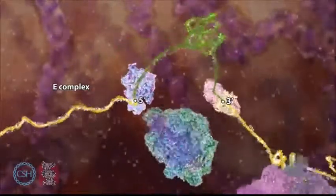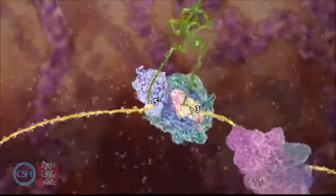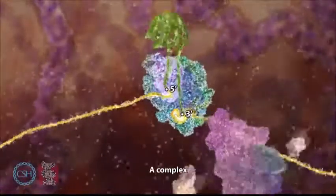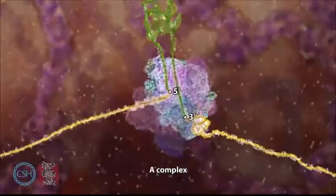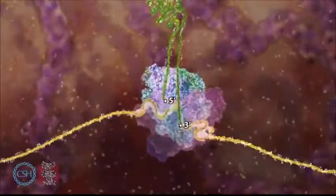RNA splicing begins with assembly of helper proteins at the intron-exon borders. These splicing factors act as beacons to guide small nuclear riboproteins to form a splicing machine called the splicesome.